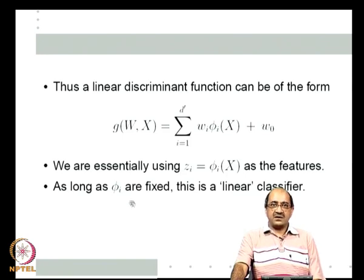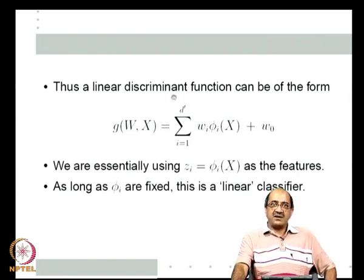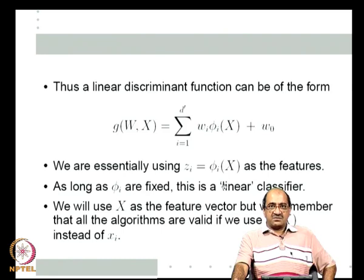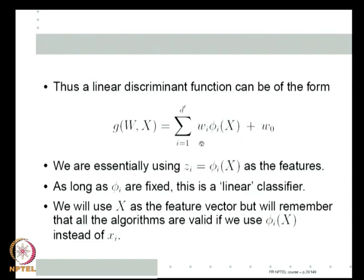All the techniques we are going to present for linear classifiers will be valid if instead of using x_i as features we use φ_i(x), where φ_1, φ_2, and so on are some pre-fixed functions. For the rest of the lecture and for many lectures to follow, we will mostly use x itself as the feature vector, writing the discriminant function as Σ w_i x_i + w_0. But we will remember that all the algorithms are valid if we replace x_i by φ_i(x). These φ_i are called fixed basis functions—we will see later in the course why that name comes from.